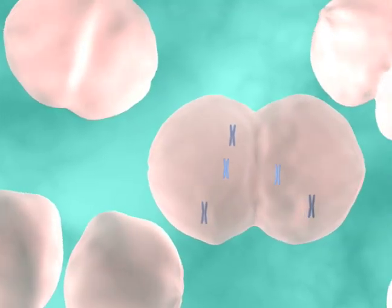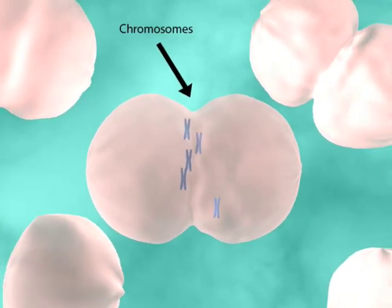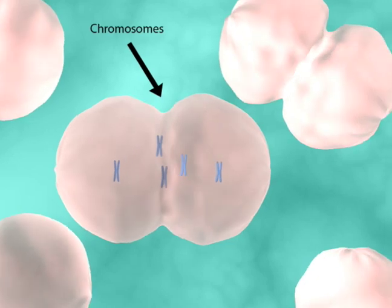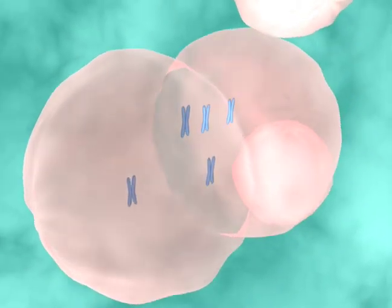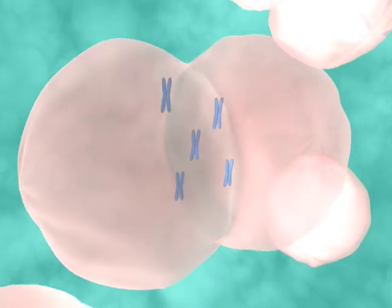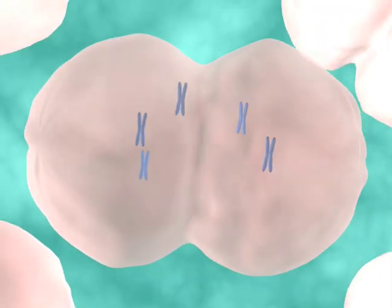Cell divisions begin with the compaction of DNA into X-shaped chromosomes. DNA is replicated earlier in the cell cycle and the two identical copies, or chromatids, are held together as a single chromosome until cell division.